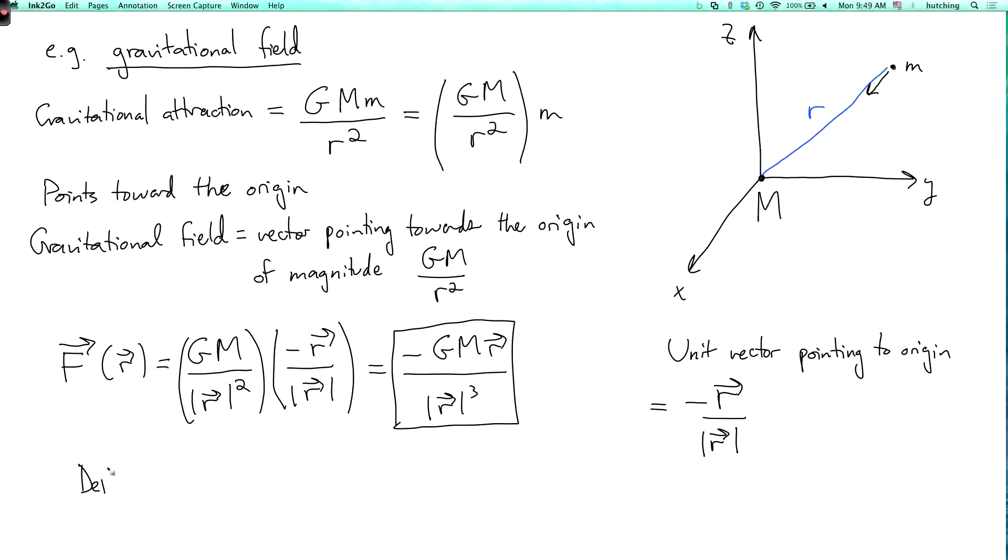And this is defined at all points except the origin. So as you go towards the origin, the magnitude of this vector field becomes infinite. Really, if you try to compress all the mass into a point, you would eventually get a black hole. But that's not really the topic of this course. Anyway, so that's an example of a vector field. And we're going to do some math with vector fields.